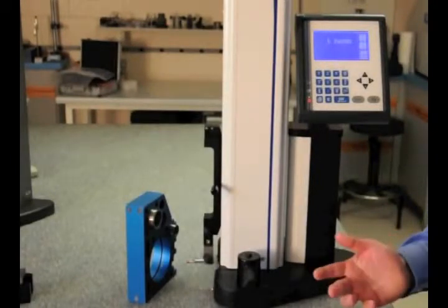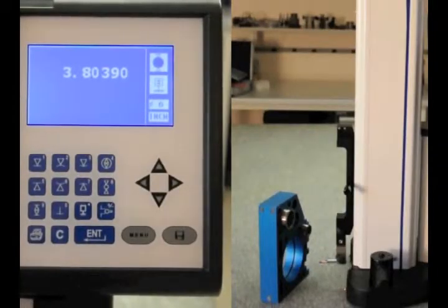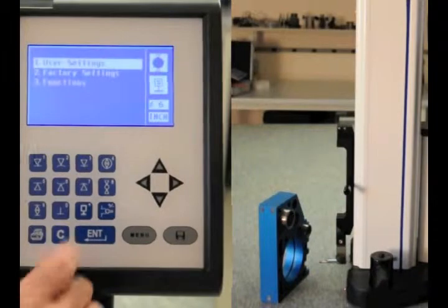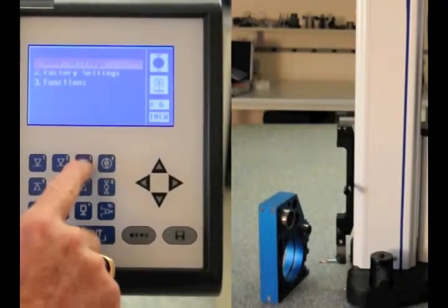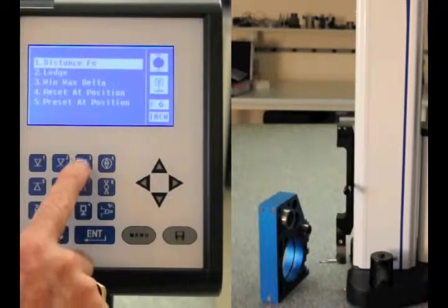We've done some basic measurements. Now we're going to go into doing a min, max, and TIR feature. To do that, we hit the menu key. We're going to select functions, number three, and we're going to select number three, min, max, delta, or TIR.